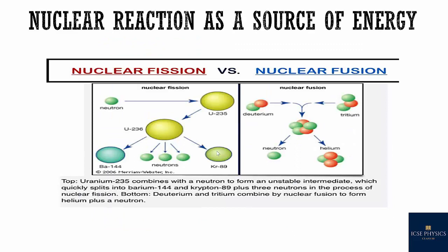Nuclear reaction as a source of energy — when a uranium nucleus is bombarded with a slow neutron, it splits into two light nuclei and a large amount of energy is released. This is known as fission, as you can see in this figure. When two nuclei combine to form a nucleus, fusion occurs and energy is released. The energy released is nuclear energy, from which atom bombs are made.